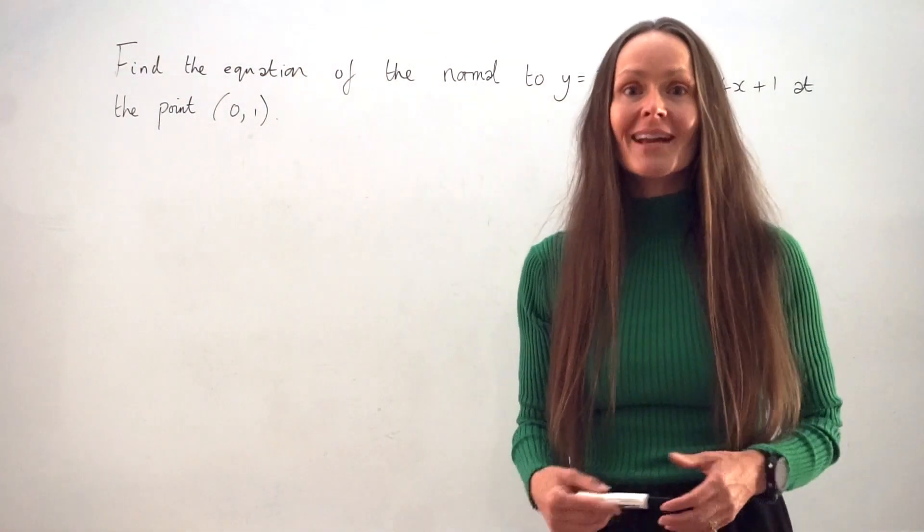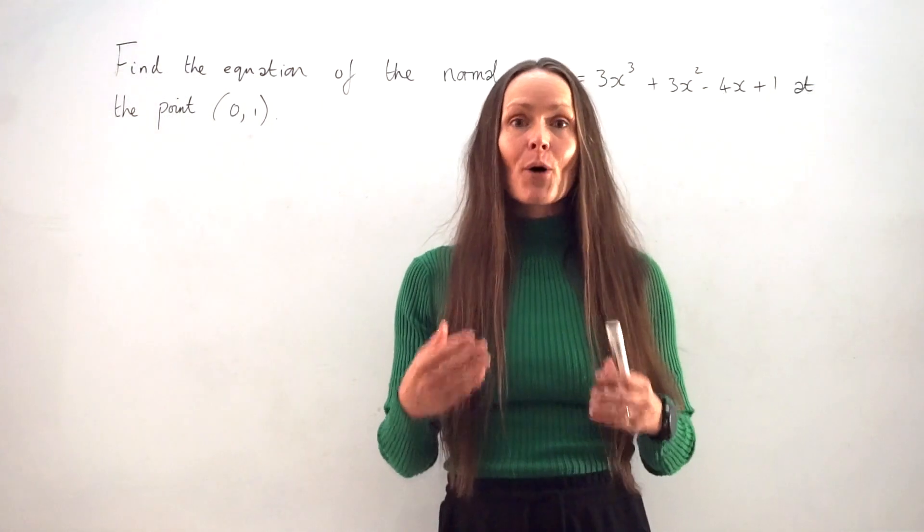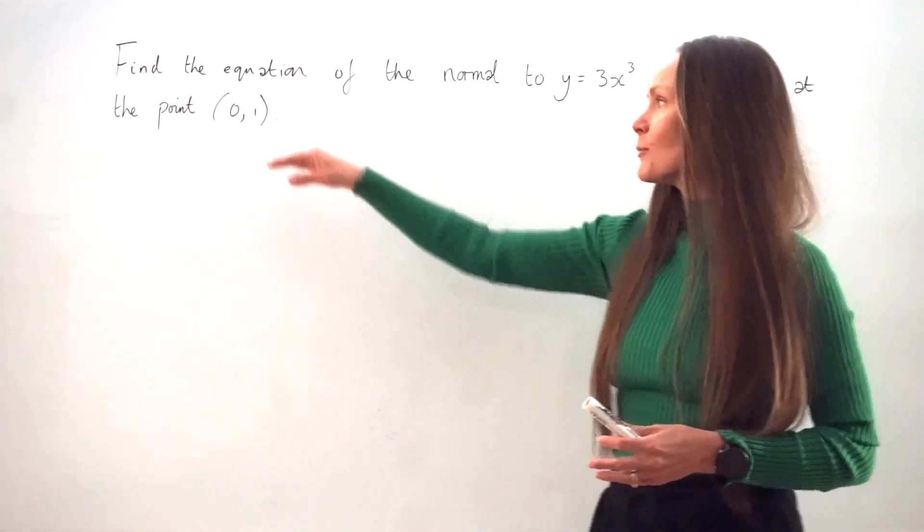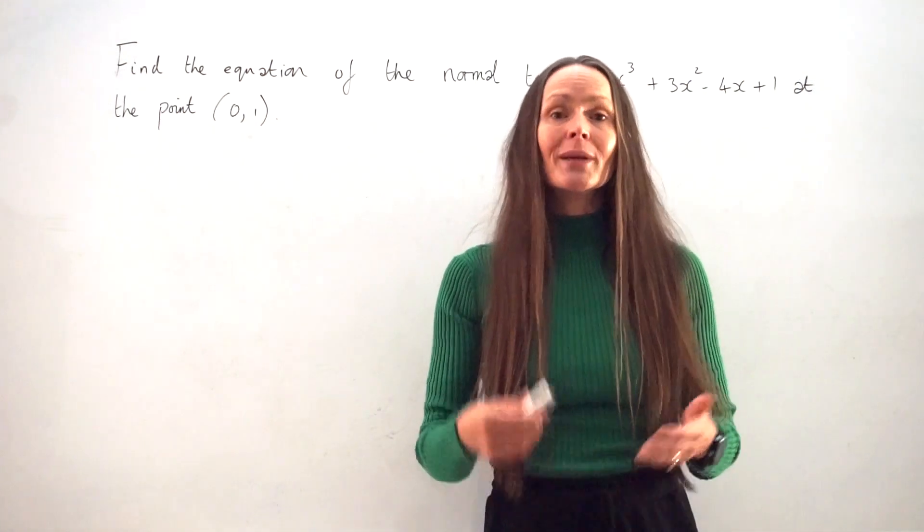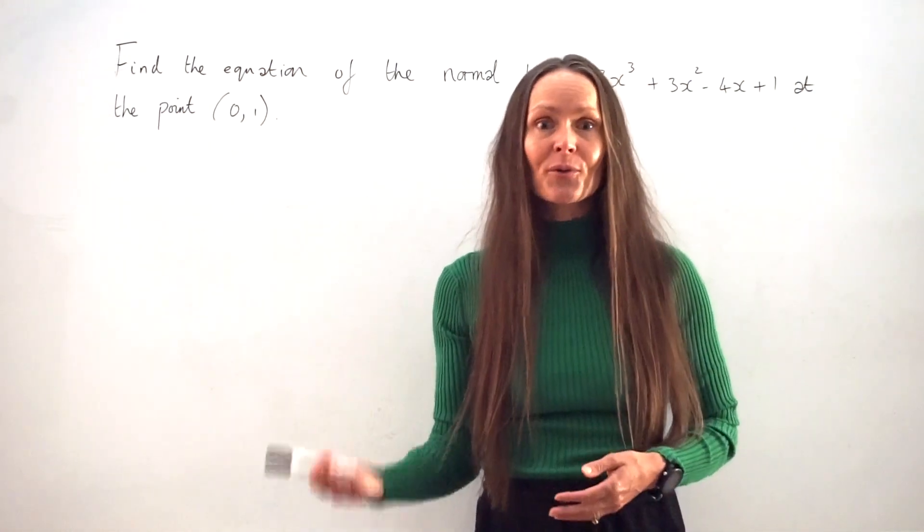So the normal is a straight line that is perpendicular to the curve at the point (0,1). And to work out the equation of a straight line, we need to know the gradient and also the y-intercept.